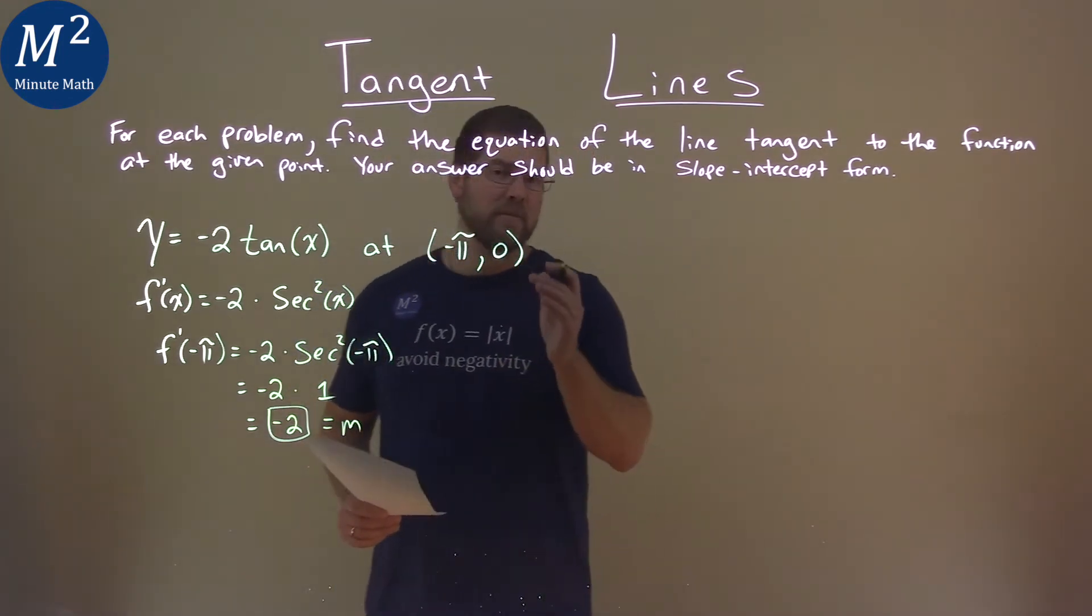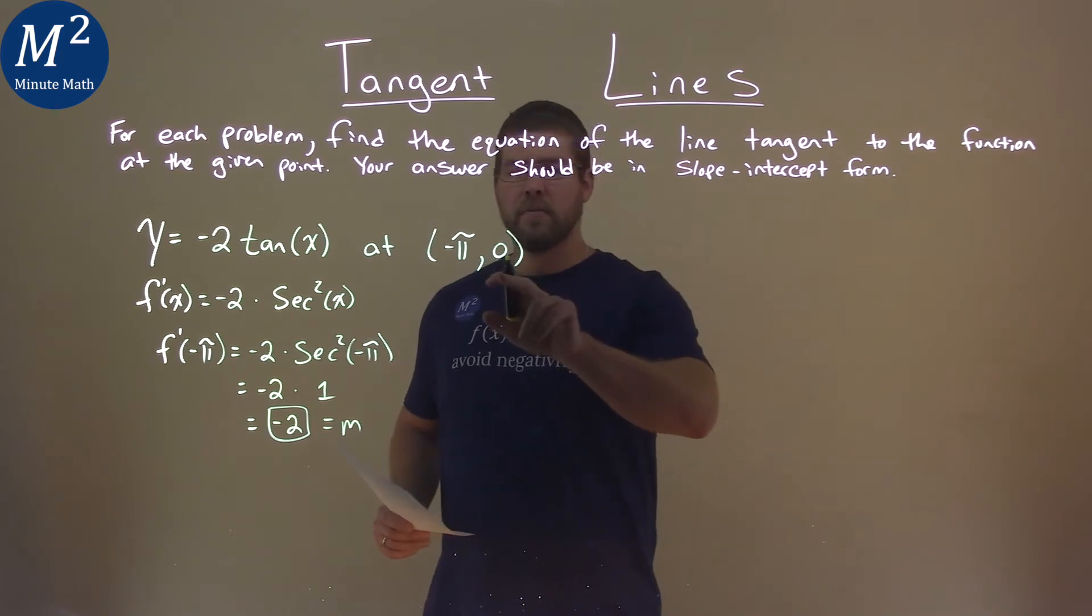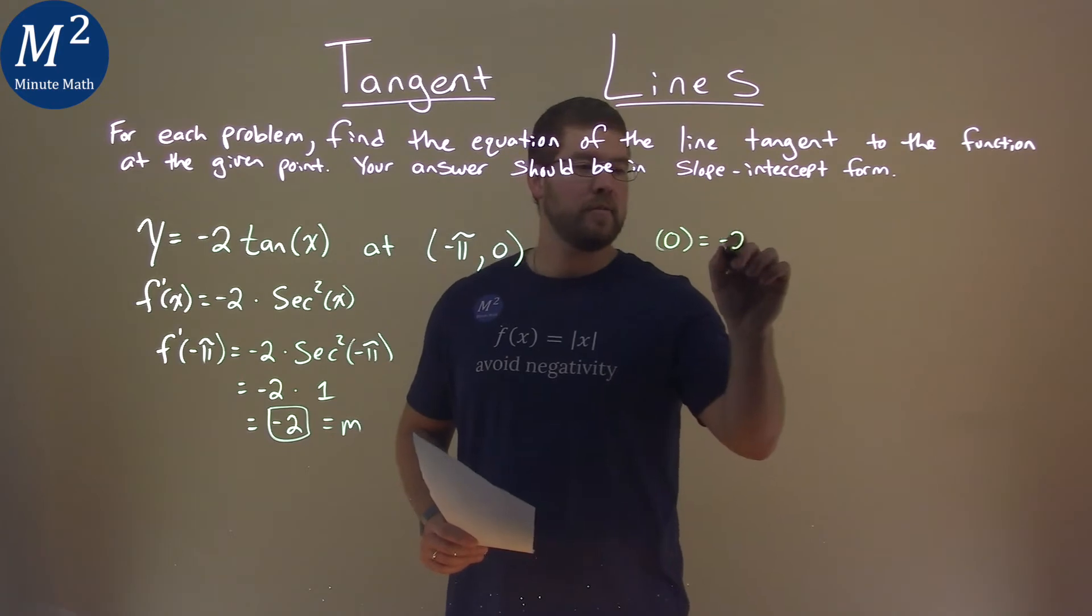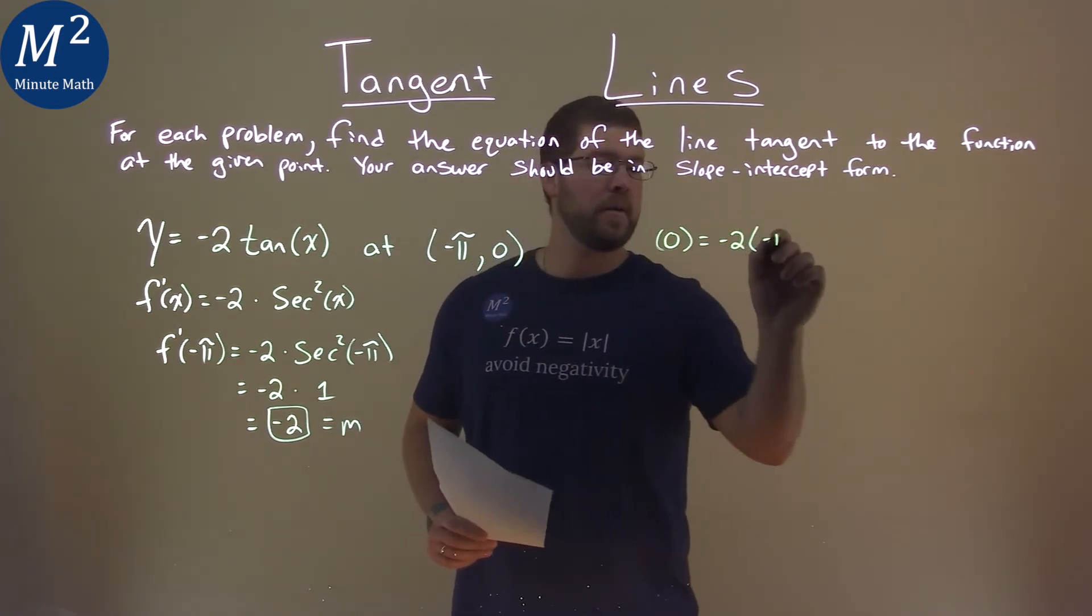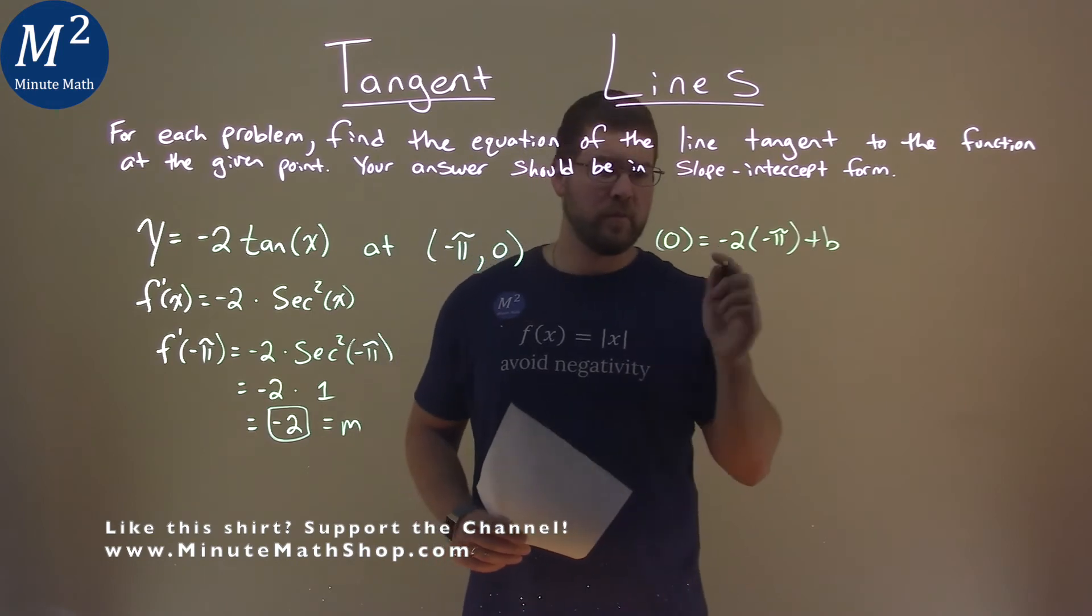But we also have to find our b value, y equals mx plus b. So we use our coordinate point here: 0 for the y equals our slope, negative 2 times the x value, negative pi, plus b. And now we have to solve for b.